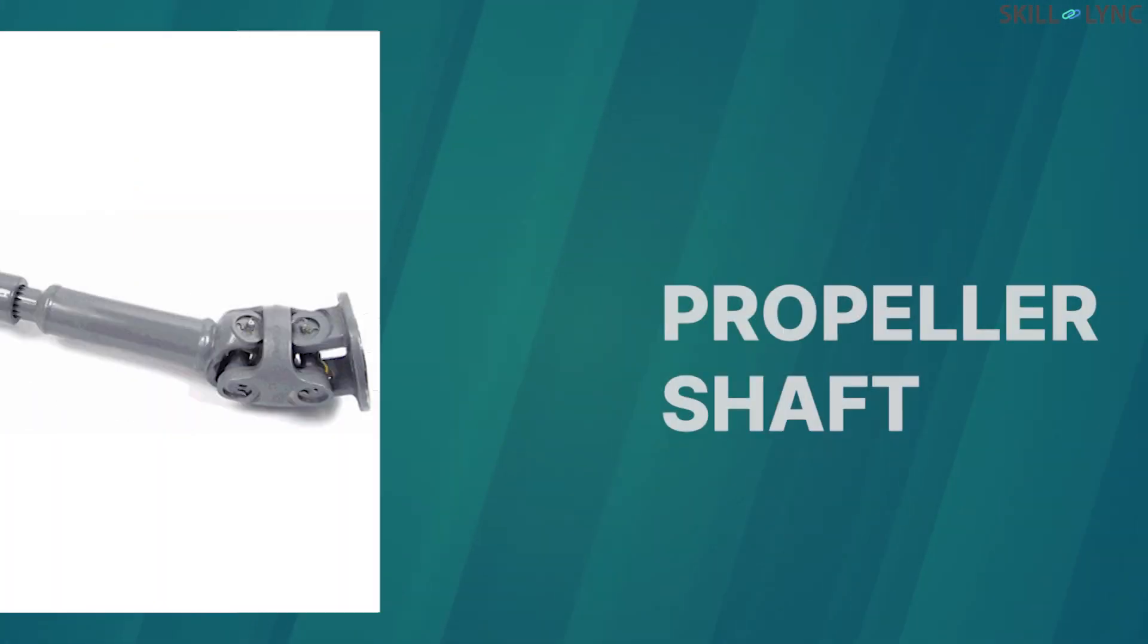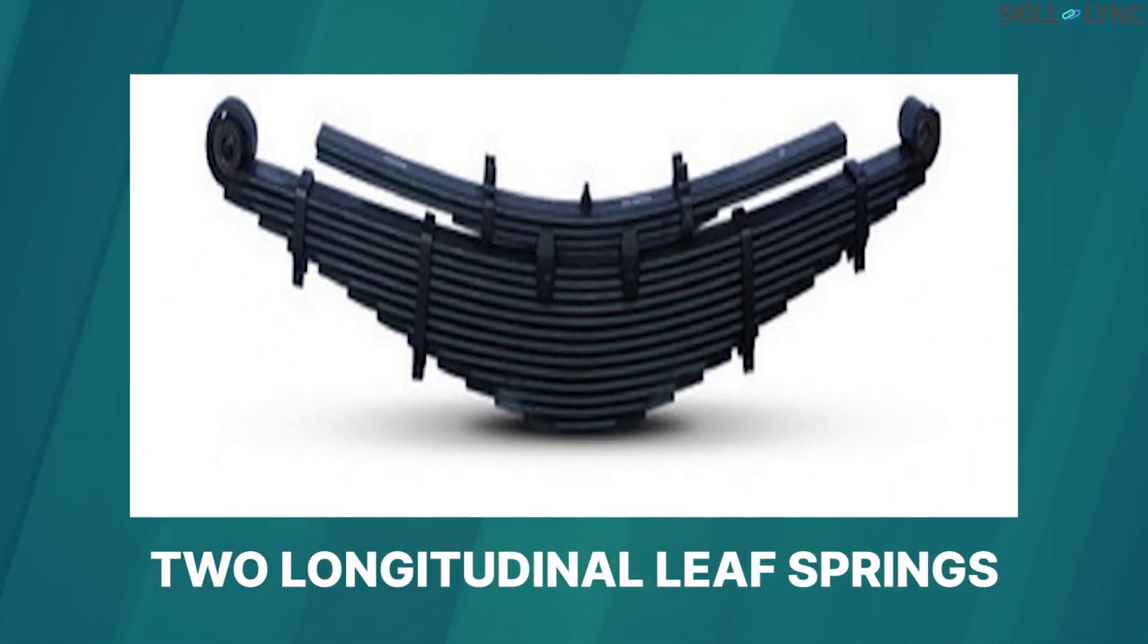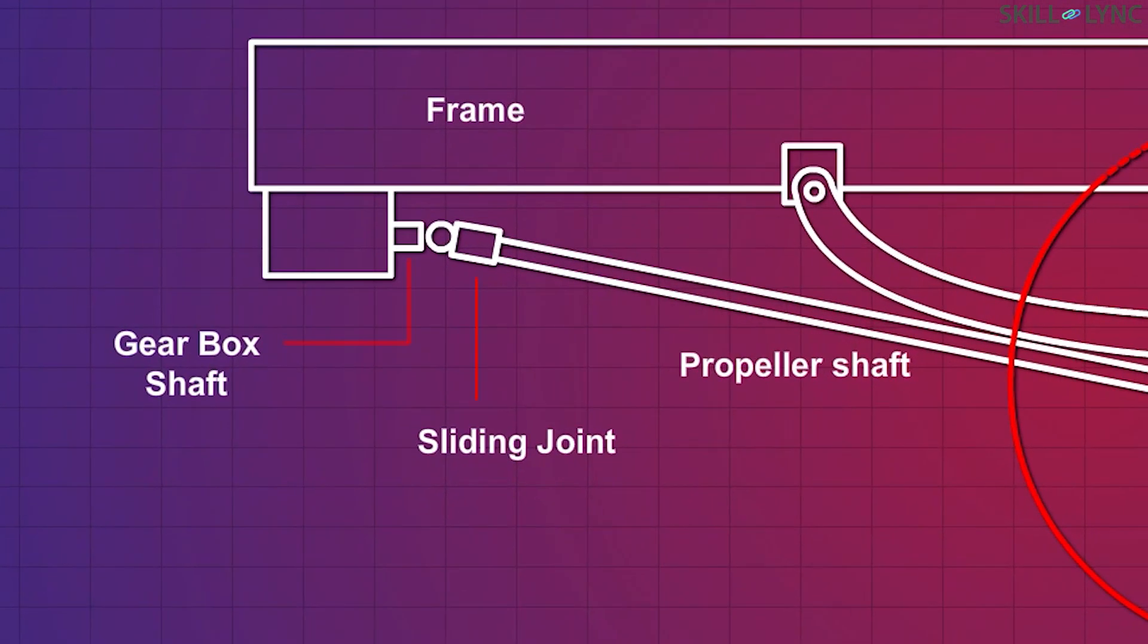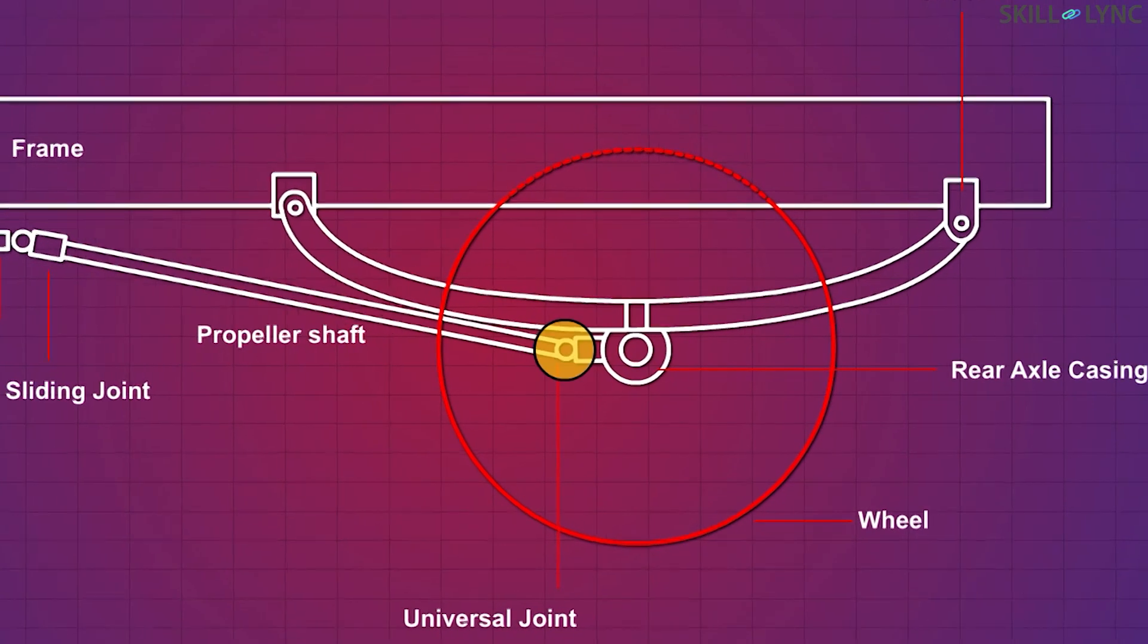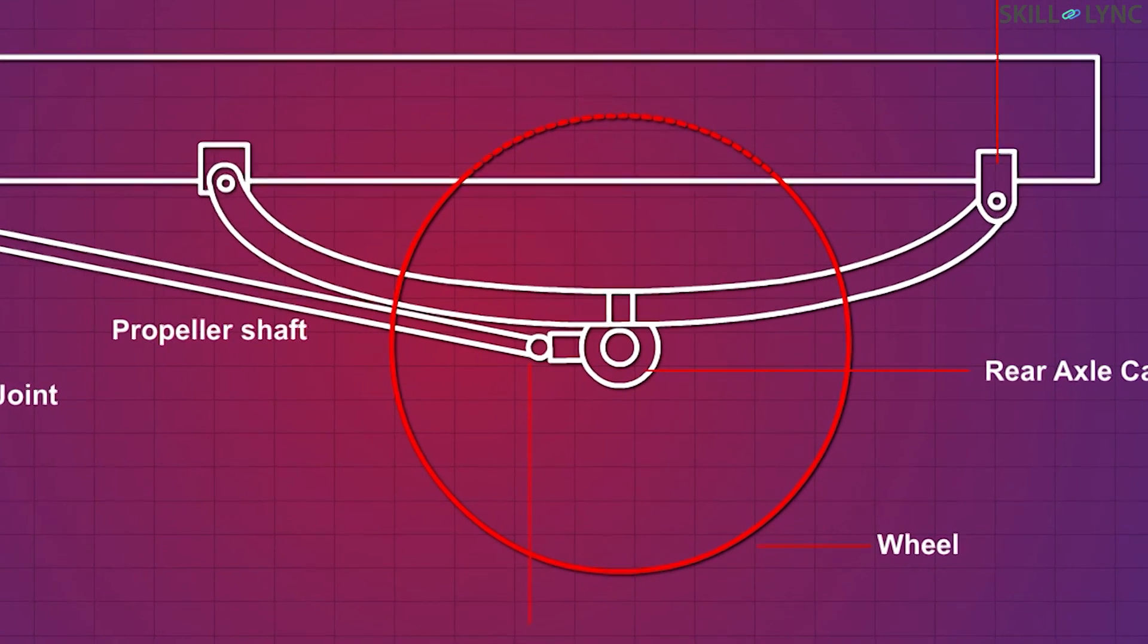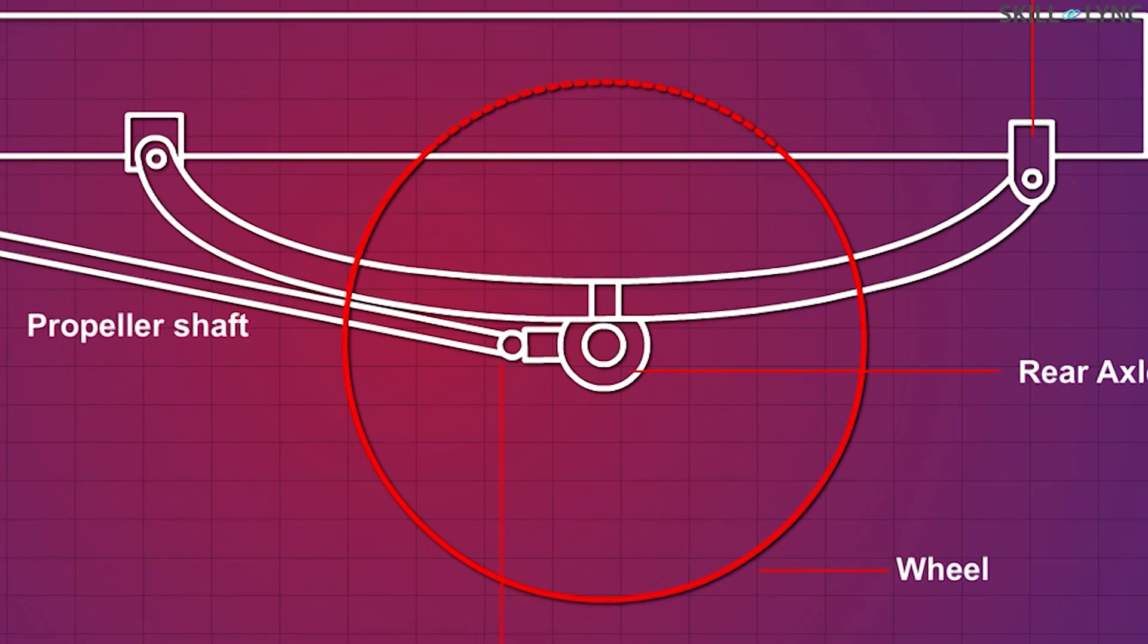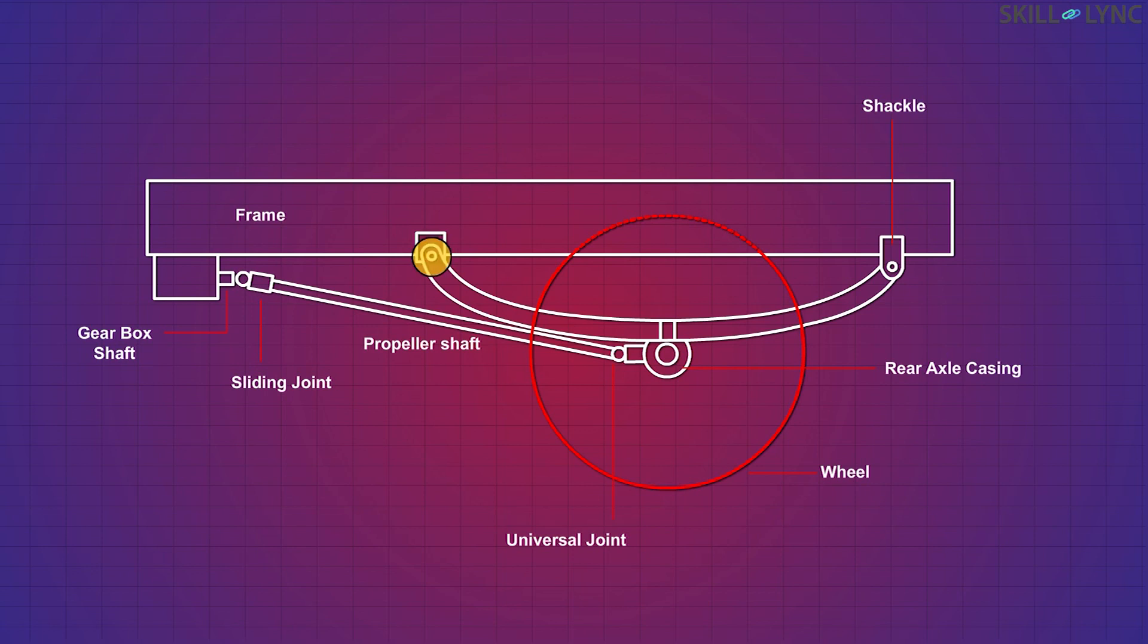The Hotchkiss drive consists of a propeller shaft and two longitudinal leaf springs. The front end of the propeller shaft is fixed to a sliding joint placed between the gearbox and the propeller shaft. Similarly, the rear end is fixed to a universal joint placed between the rear axle casing and the propeller shaft. The front end of the leaf spring is hinged to the frame while the rear end is connected to the frame with swinging shackles.